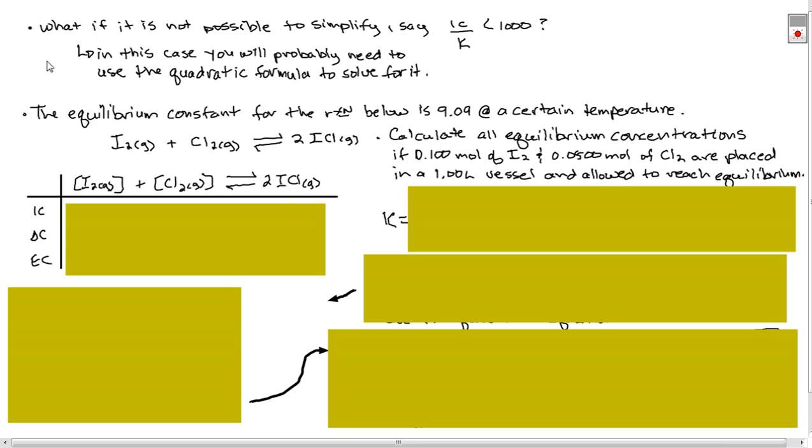Now any time on any tests that I give you or exam, I'll definitely give you the quadratic formula. But you will have to go through your math skills and make sure you master doing quadratic formulas. You will have to FOIL for these questions. So remember that, FOIL, you will have to practice that. So say we've got iodine gas and chlorine gas is going to make iodine chloride. And we want to calculate all equilibrium concentrations if 0.100 moles of iodine gas and 0.050 moles of chlorine gas are placed in a 1 liter vessel and allowed to reach equilibrium.